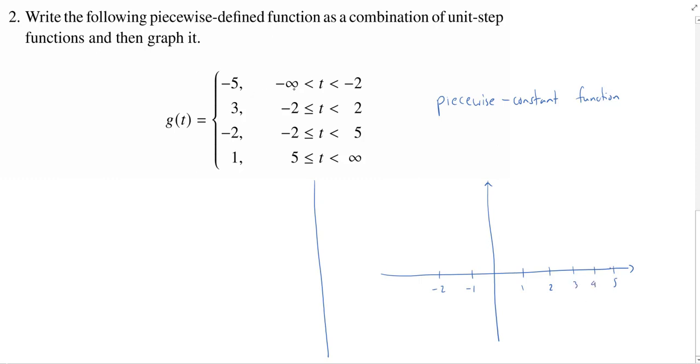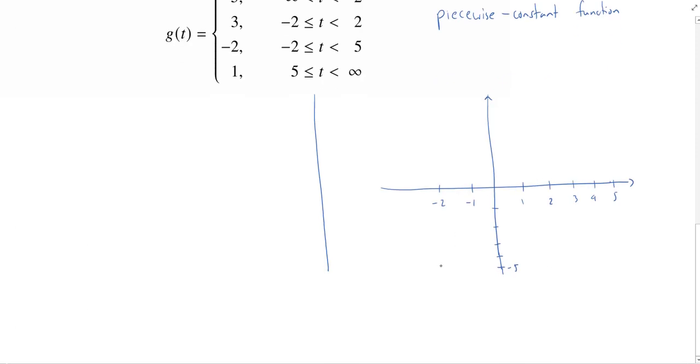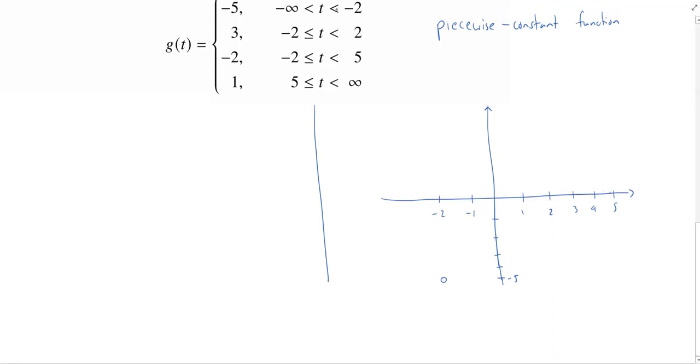So it says that between negative infinity and negative two, we get the constant function negative five. So we need to go down here: one, two, three, four, five. So that'll be negative five. And so all the way up until we get to negative two. I'm going to put a little open dot at negative two, negative five, because it's not quite defined as negative five when we get to negative two. And then it's just a constant function as we head off to the left.